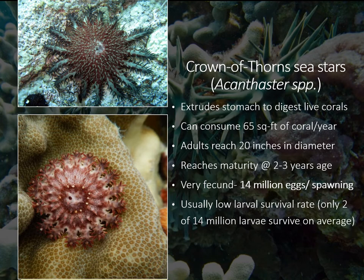Crown of Thorns Seastars reach maturity at around two to three years of age. COTS are very fertile and can produce around 14 million eggs per spawning event. However, the typical survival rate of larvae is extremely low — only about two of these 14 million larvae survive on average. Because of this low survival rate, blooms or large aggregations of this species are often naturally avoided.